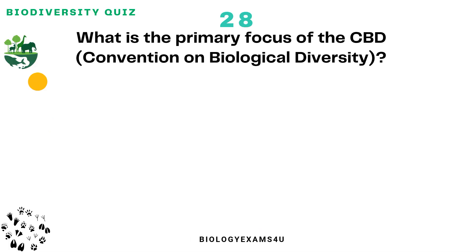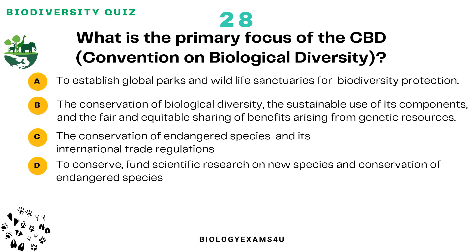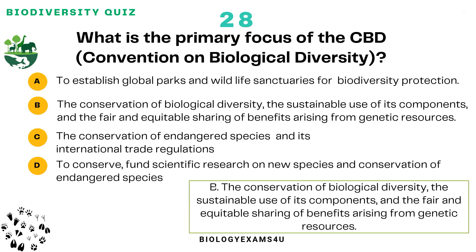Question number 28: What is the primary focus of the CBD, or Convention on Biological Diversity? Option A: To establish global parks and wildlife sanctuaries for biodiversity protection. Option B: The conservation of biological diversity, the sustainable use of its components, and the fair and equitable sharing of benefits arising from genetic resources. Option C: The conservation of endangered species and its international trade regulations. Option D: To fund scientific research on new species and conservation of endangered species. The answer is: the conservation of biological diversity, the sustainable use of its components, and the fair and equitable sharing of benefits arising from genetic resources.